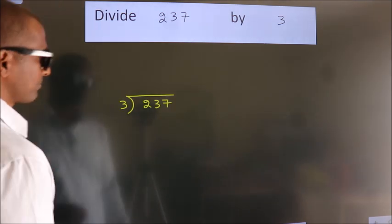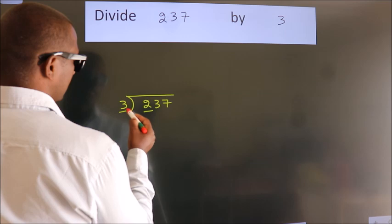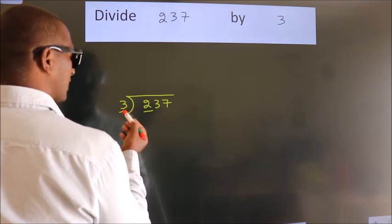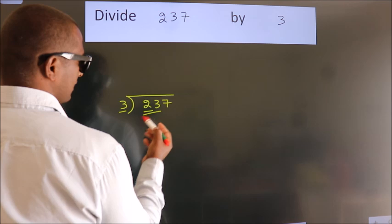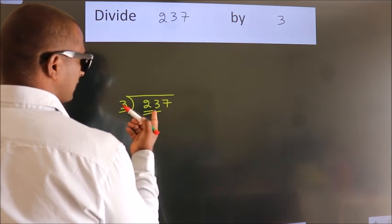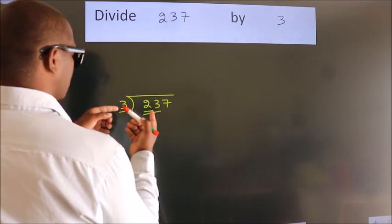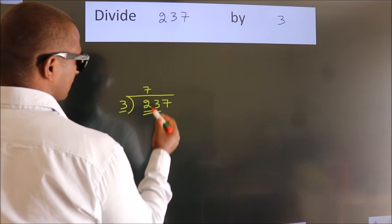Next. Here we have 2. Here 3. 2 smaller than 3. So we should take 2 numbers. 23. A number close to 23. In 3 table is 3 times 7 is 21.